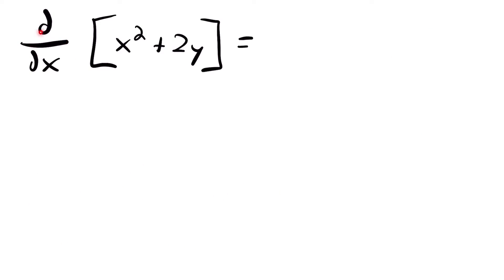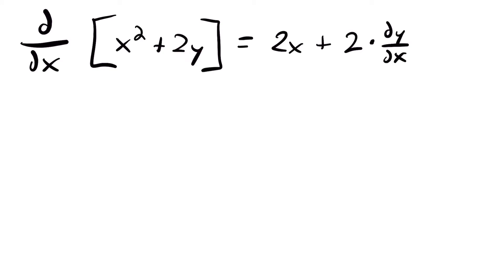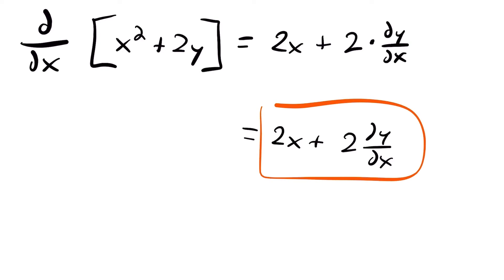Let me show you another example. Here we have the derivative with respect to x of x squared plus 2y. We take the derivative of x squared as normal to get 2x, and then the derivative of 2y with respect to x: treating it as if it were 2x, the derivative would be 2, but since it was actually y, we multiply by dy/dx. So our answer is 2x plus 2 times dy/dx.